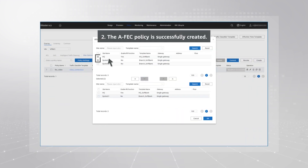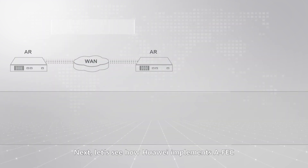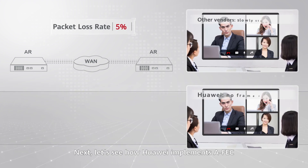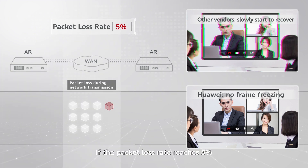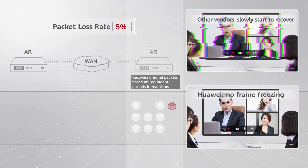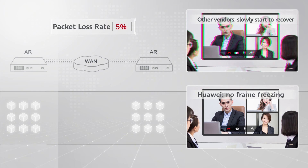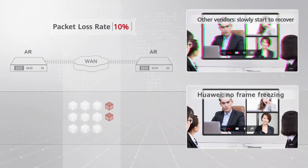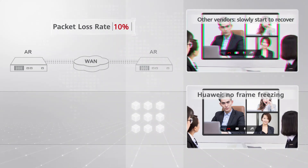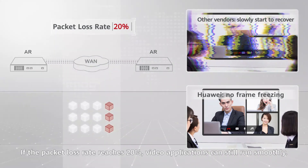Next, let's see how Huawei implements FEC at three different packet loss rates. If the packet loss rate reaches 5 percent, 10 percent, or even 20 percent, video applications can still run smoothly.